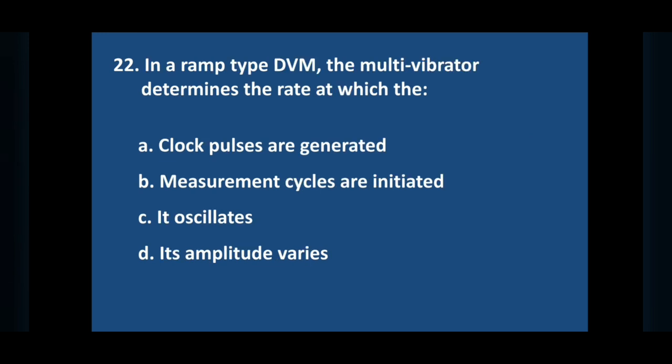Question number 22: in a ramp type DVM the multi-vibrator determines the rate at which the. Answer is option B, measurement cycles are initiated.